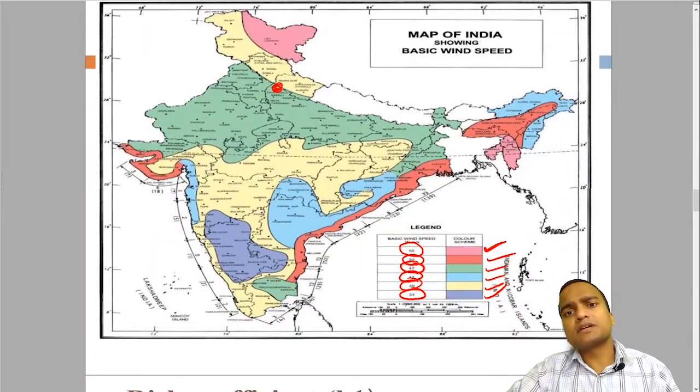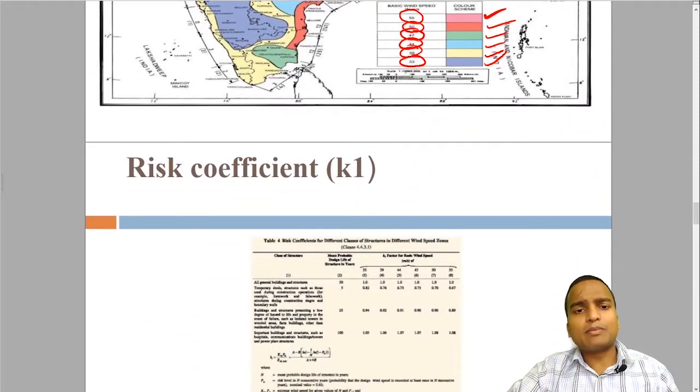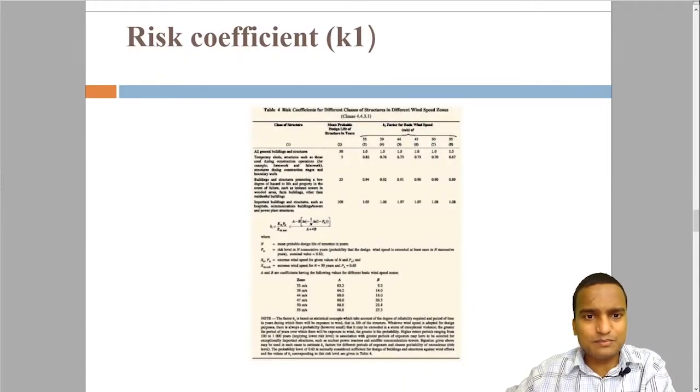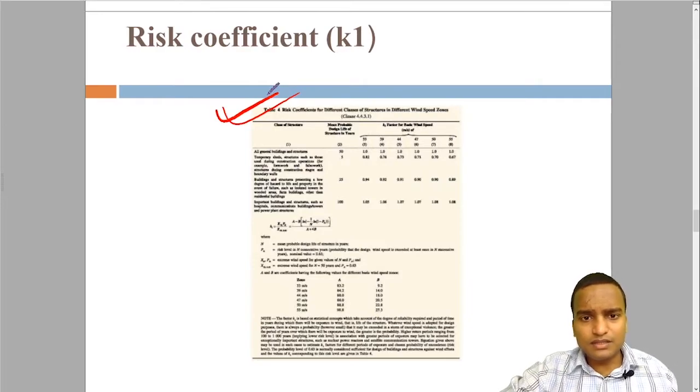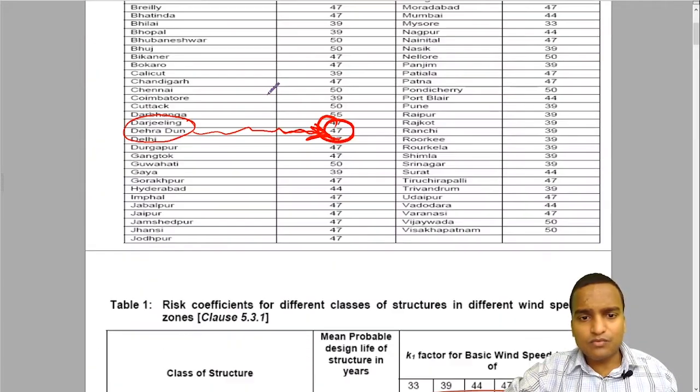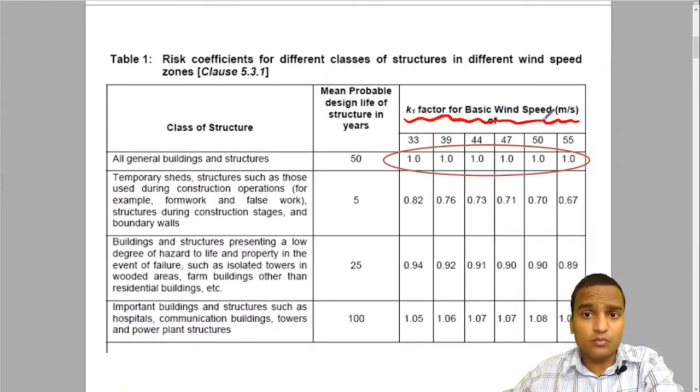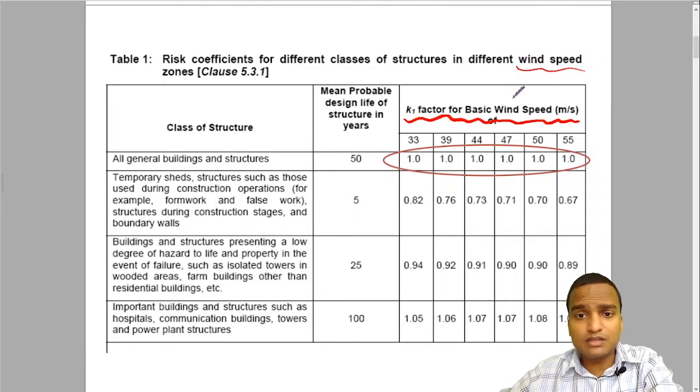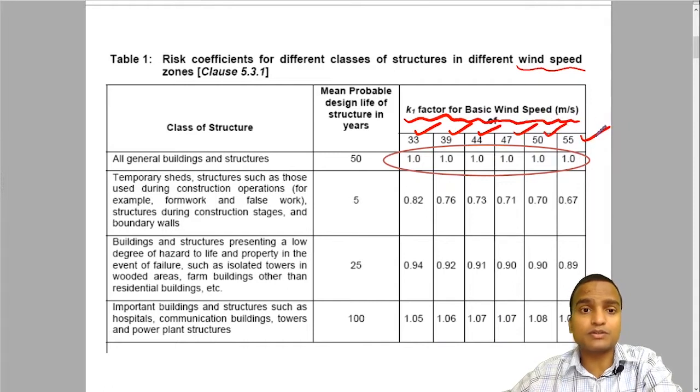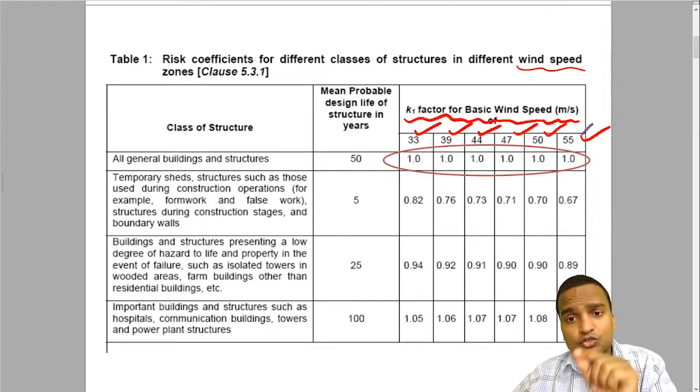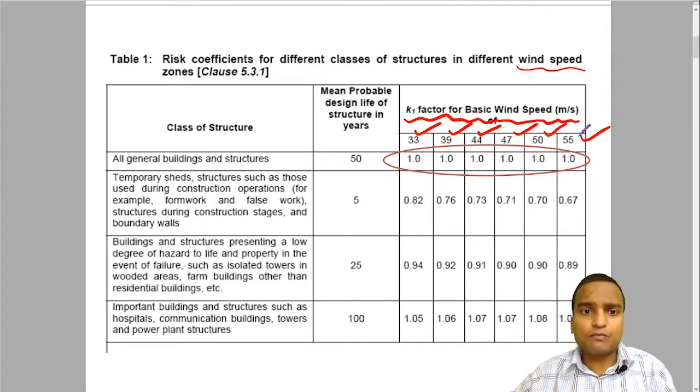Then comes K1, K2, and K3. K1 is the probability factor or risk coefficient. This snapshot is from the IS code. The K1 factor for basic wind speed: different wind speed zones are there. This is 33 meter per second zone, 39, 44, 47, 50, 55 meter per second zones. For each zone the value of K1 will be different.